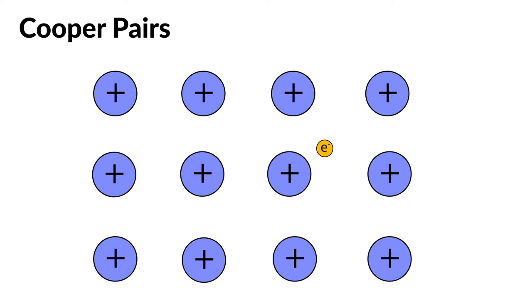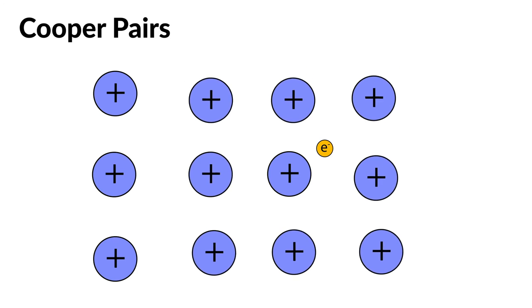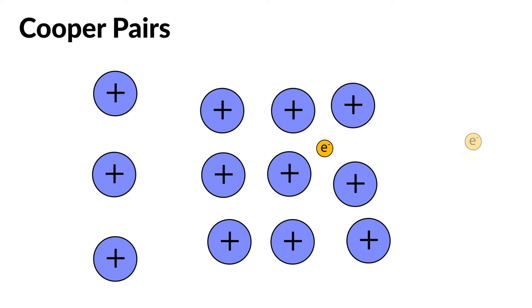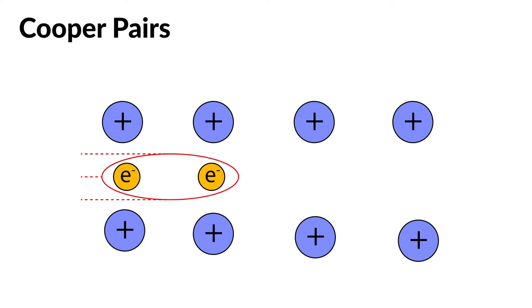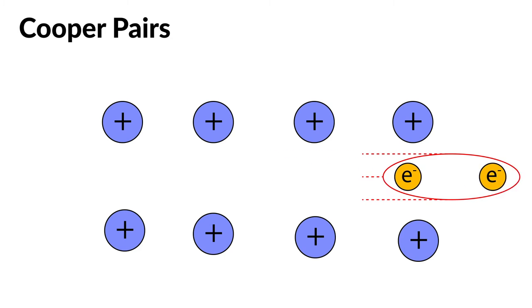This is due to the formation of Cooper electron pairs. At low temperatures, when there is little vibrational energy, cations condense around an electron. This dense area of positive charge attracts another electron, which forms a Cooper pair. Electron pairs are harder to impede, and therefore are able to travel through the material with zero resistance.